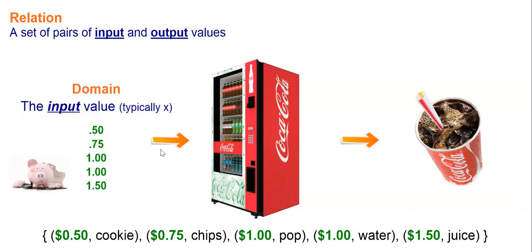Now the values that you input into the relation, those values are called the domain. In the example of our vending machine, that would be the money that you're inputting. Typically, when we study relations in school, that would be the x of the relation.